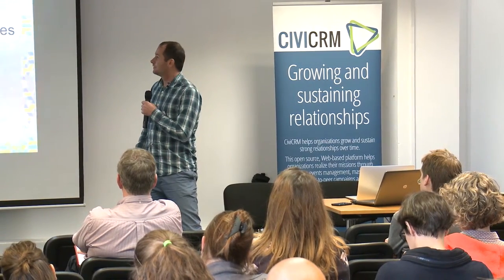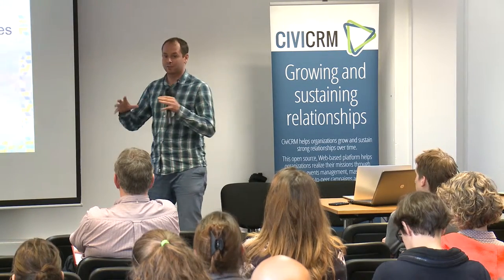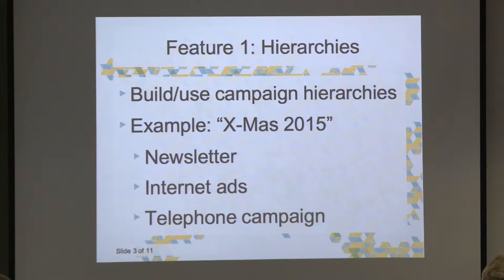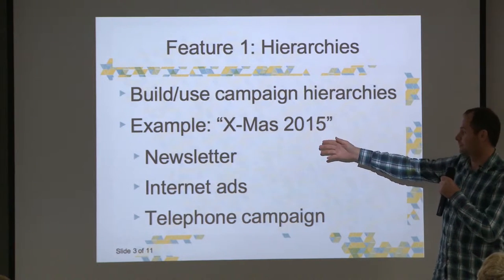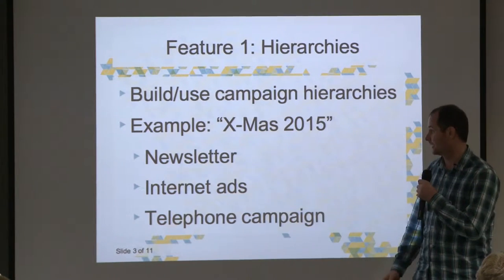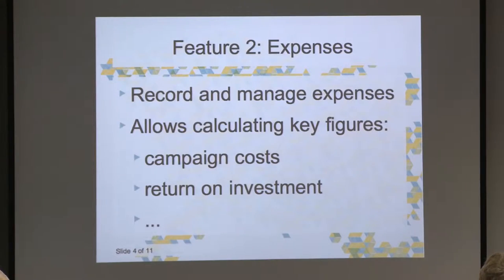To explain what I mean by structured campaigns: there is a feature in the database that lets you build campaign structures like a hierarchy. For example, we have a Christmas campaign 2015 that consists of different parts — a newsletter, internet ads, and a telephone campaign — so we can distinguish where new members are coming from. Unfortunately, this feature hasn't been exposed in Civi; you can't currently say this is a sub-part of another campaign. Since the structures were already in the database, we didn't have to change Civi itself — we just used an extension to expose these new functionalities.